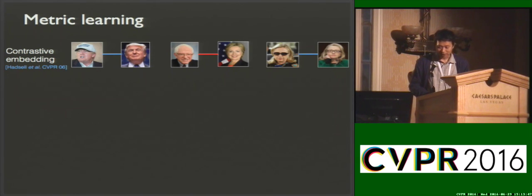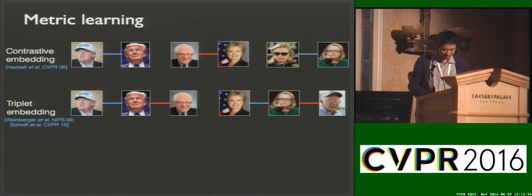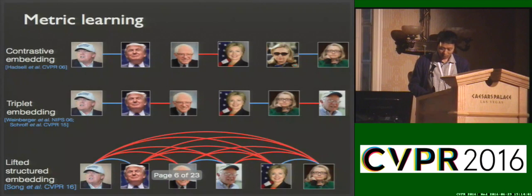Specifically, contrastive embedding is learned from a batch of pairs of examples with positive and negative labels. In contrast, triplet embedding is learned from a batch of triplet examples where positives and negatives are defined with respect to predefined anchor points.